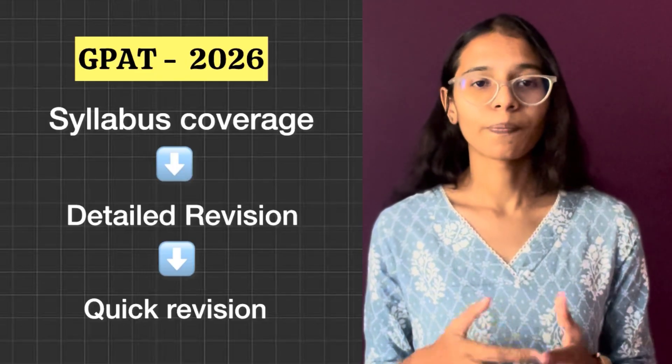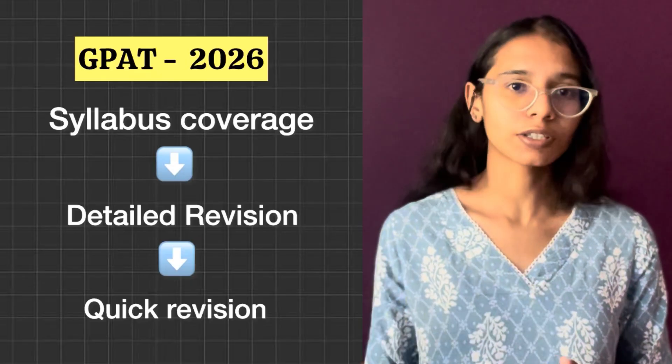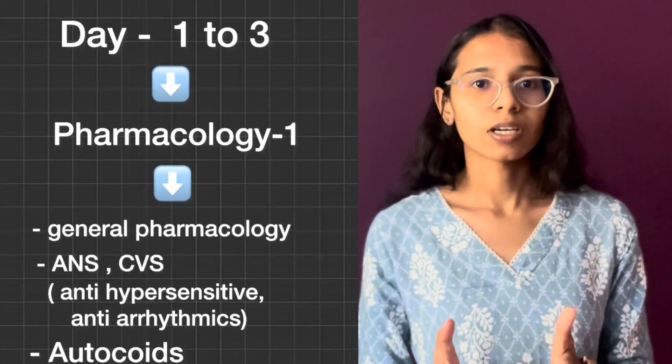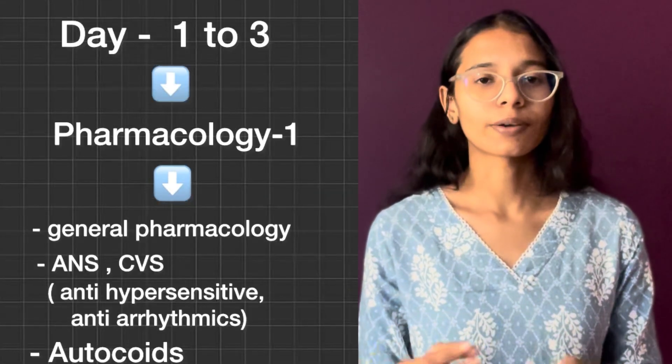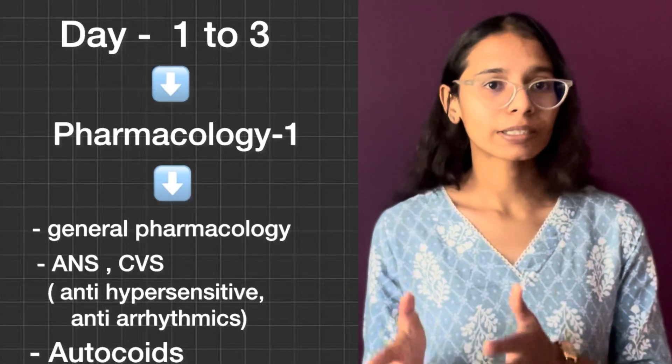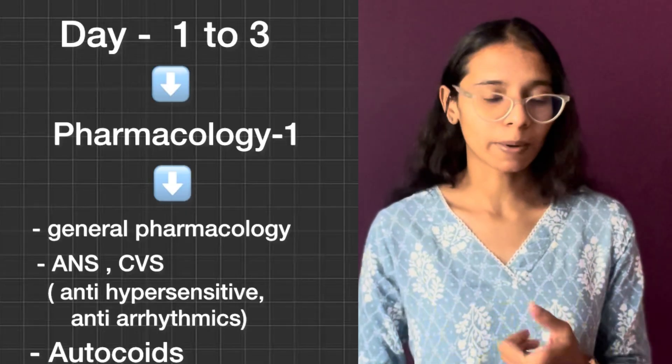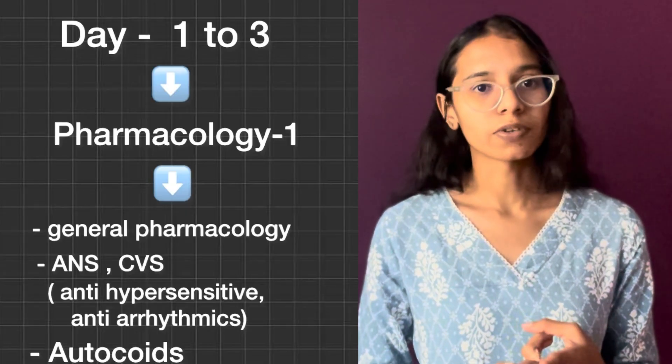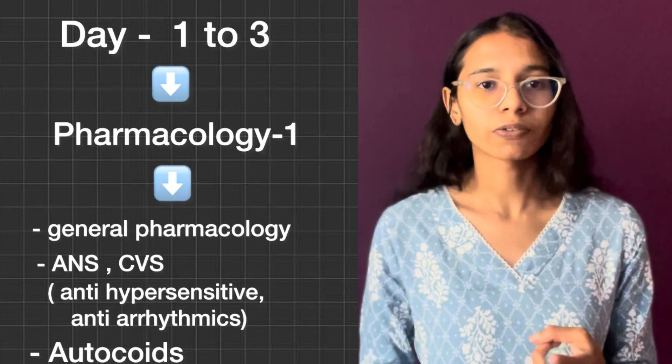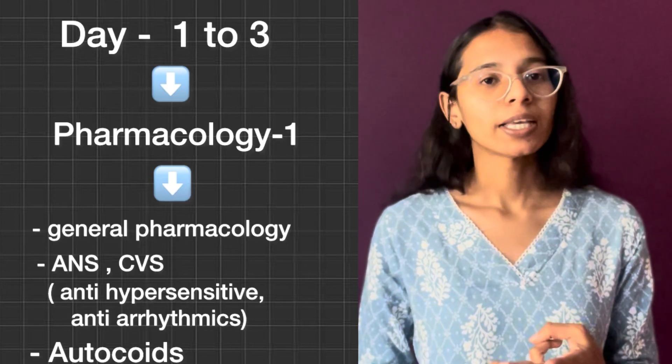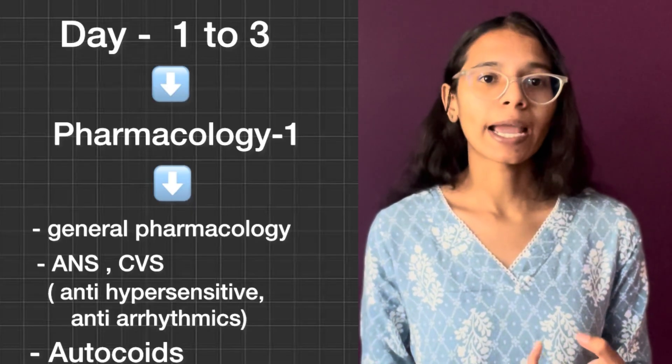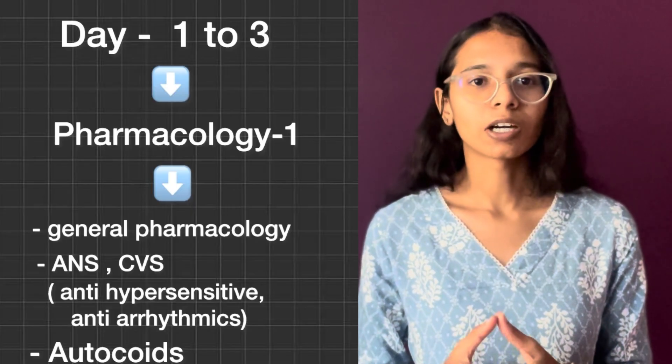Now let's talk about this 30-day GPAT series with high-weightage topics. Day 1 to Day 3: Pharmacology-1. You have to cover General Pharmacology, ANS (Autonomic Nervous System), CVS (Cardiovascular System). In CVS, cover antihypertensive and antiarrhythmic drugs. And third, Autocoids.